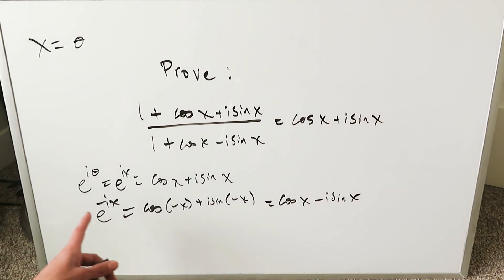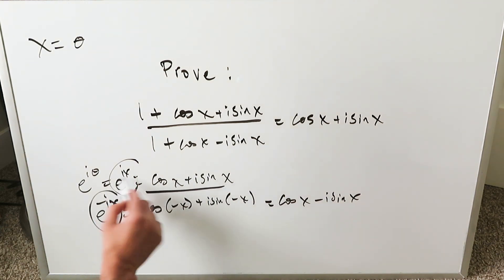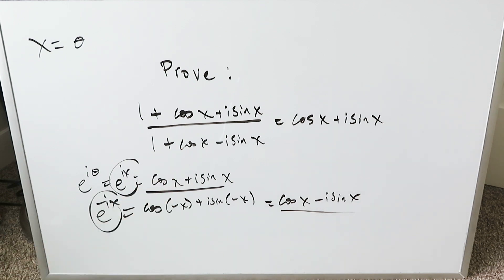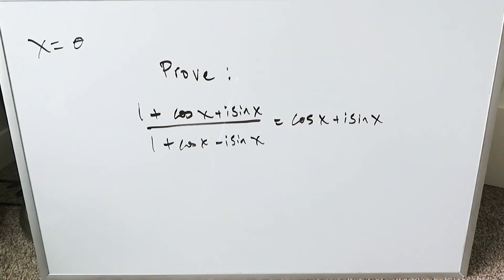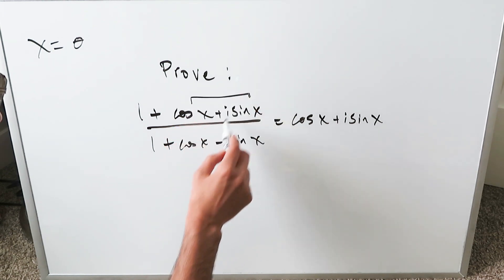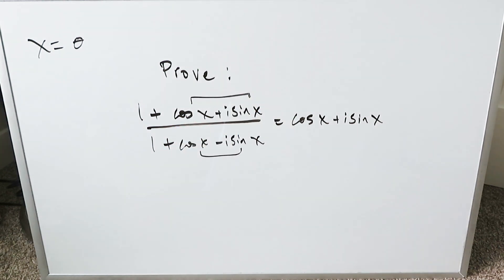Keep these two expansions in mind. They will be used in this proof. Given what I've shown you, in the numerator expression you have cos x + i sin x, and in the denominator expression you have cos x - i sin x.